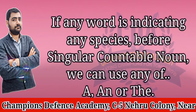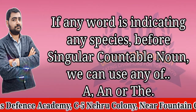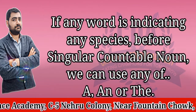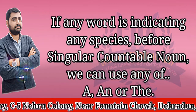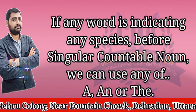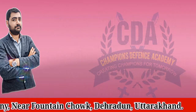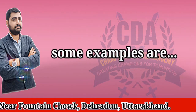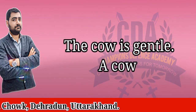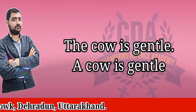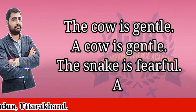If a singular countable noun refers to a whole species or category, we can use 'a', 'an', or 'the' — it makes no difference to the meaning. For example: 'The cow is gentle' and 'A cow is gentle' mean the same thing. Similarly, 'The snake is fearful' and 'A snake is fearful' are the same.